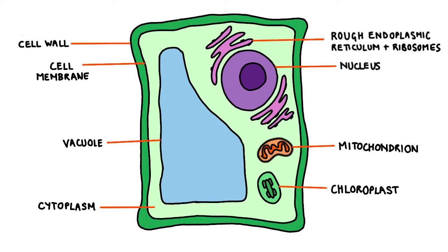Next to the cell wall, towards the interior of the cell, is the cell membrane. The cell membrane controls which substances can enter and leave the cell, such as nutrients.